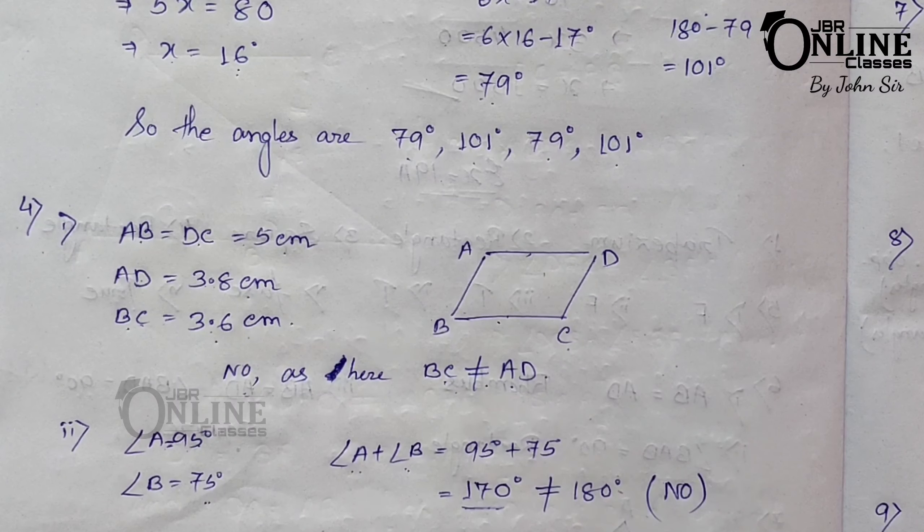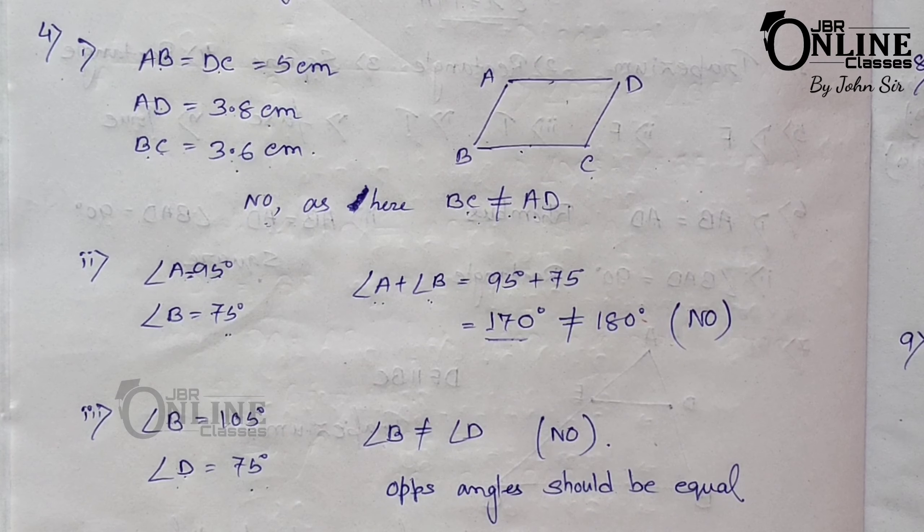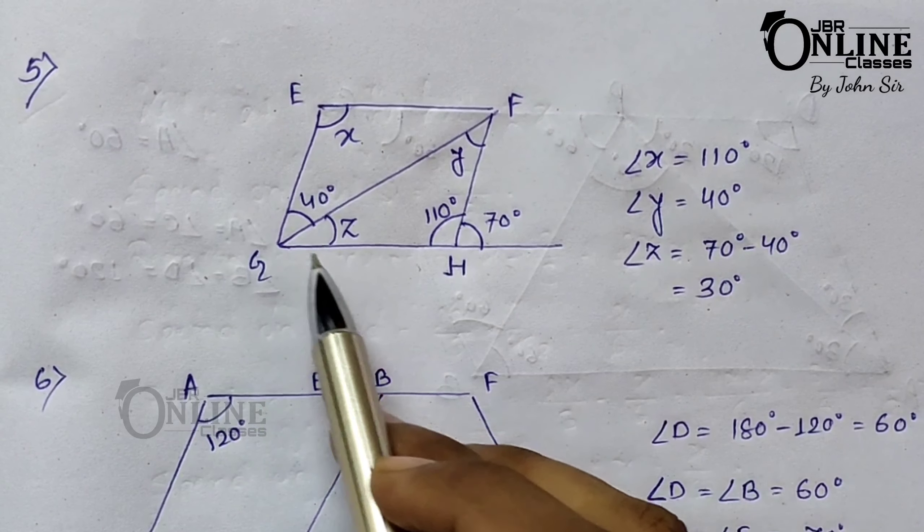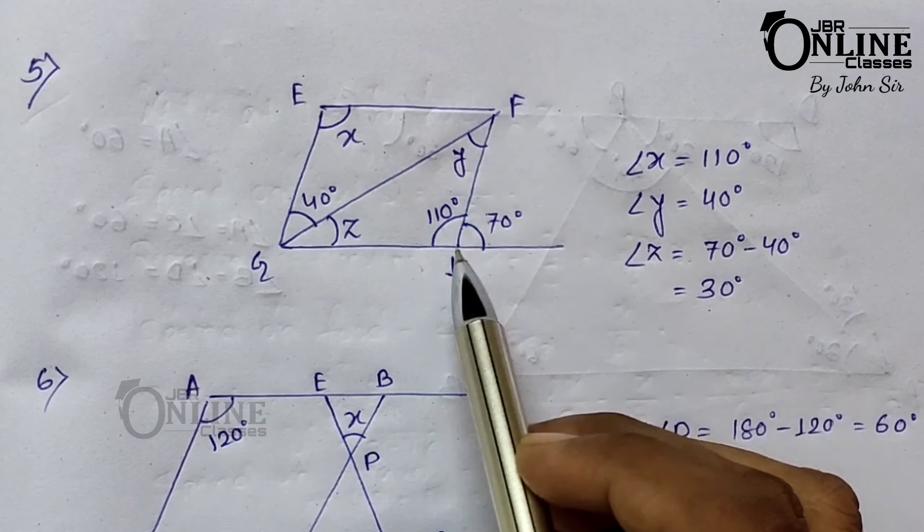Condition three: angle B = 105° and angle D = 75°. Angles B and D are two opposite angles, and opposite angles must be equal in a parallelogram, so this is also not a parallelogram.